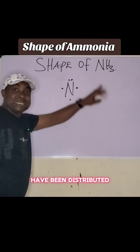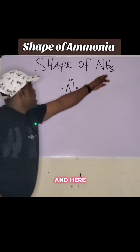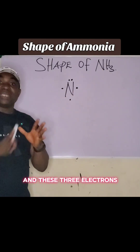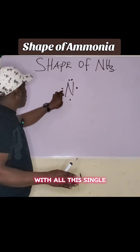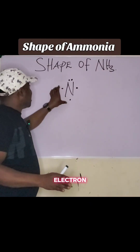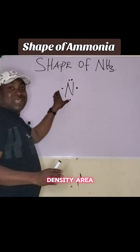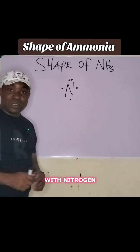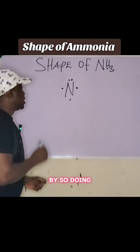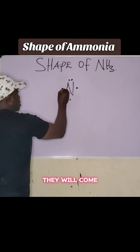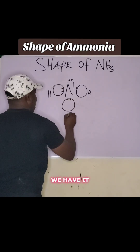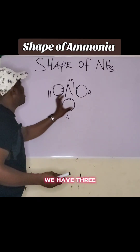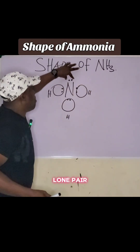Hydrogen has three electrons, and these three electrons come to pair with the single electrons on nitrogen, forming covalent bonds. By doing so, we end up with three bonding pairs and one lone pair around the nitrogen atom.